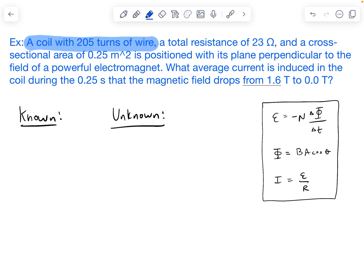So our coil here has 205 turns of wire. That's going to be our capital N. We have a total resistance of 23 ohms, so that's going to be R. Our cross-sectional area of 0.25 meters squared, that's going to be capital A. All right, what else do we have? Okay, we have the induction time, which is the 0.25 seconds.